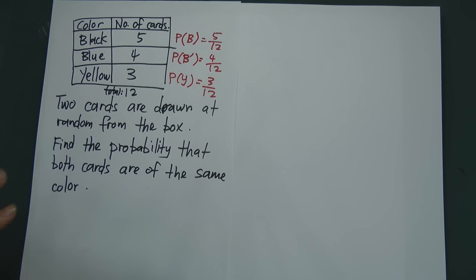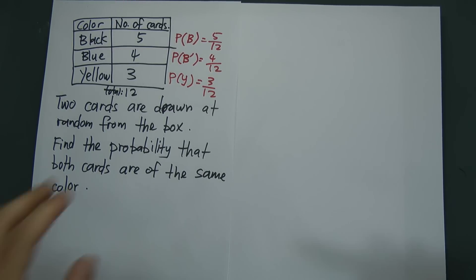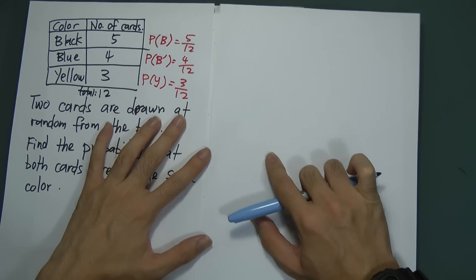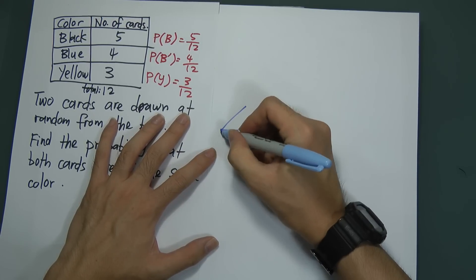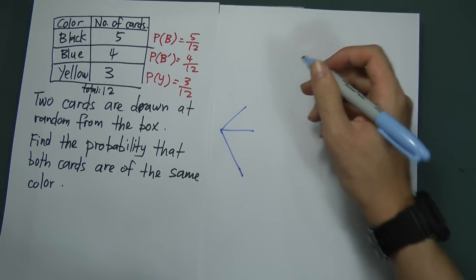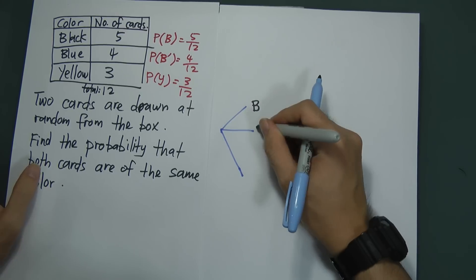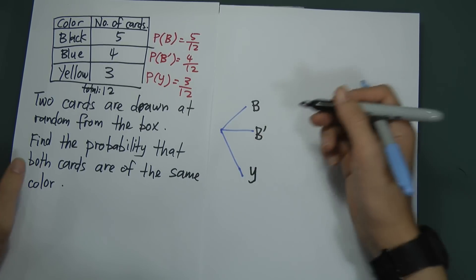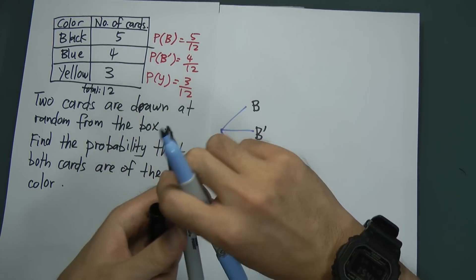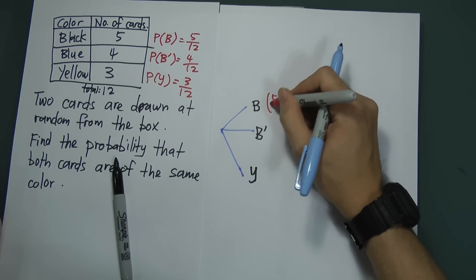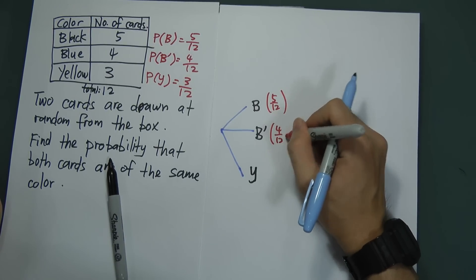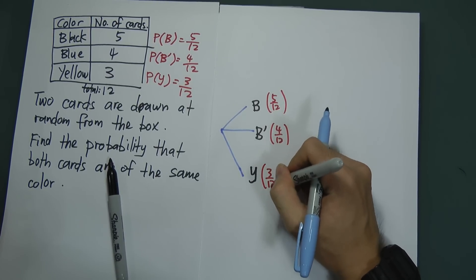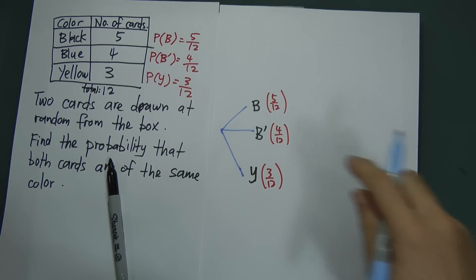For this kind of question, if you know how to use a tree diagram, it's going to be very helpful and easy. Let me draw a simple tree diagram. Since I have three different colors, my tree diagram will start with three branches: black, blue, and yellow. For black, the probability is 5 over 12; for blue, 4 over 12; for yellow, 3 over 12.